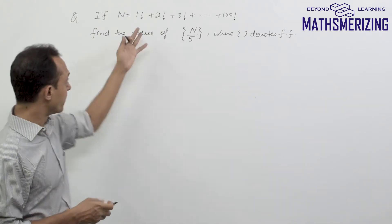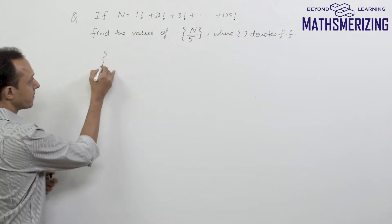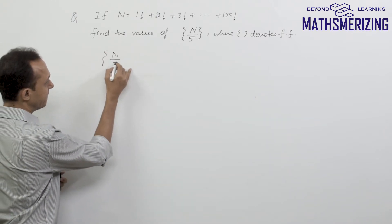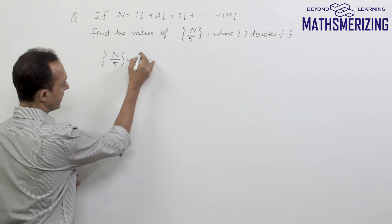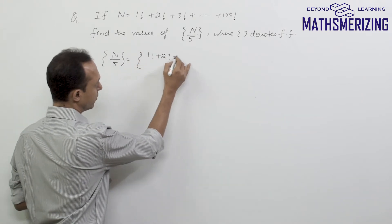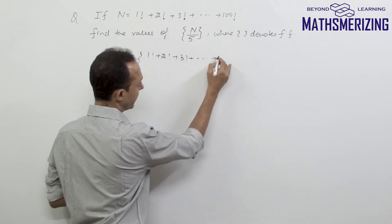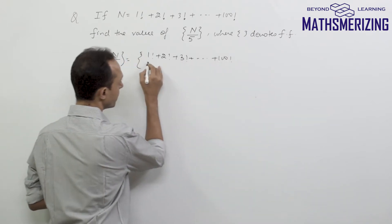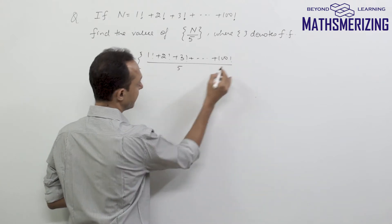Now what I'll do is I'll put the value of n. So I'll need to find the fractional part of n by 5, and I'll write it as factorial 1 plus factorial 2 plus factorial 3, and it goes up to factorial 100, divided by 5.